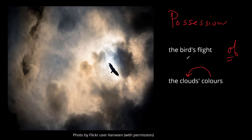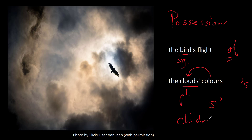Another thing to pay attention to is whether the noun is singular, as in bird, or plural, as in clouds. For singular nouns we typically add an apostrophe and an s, whereas for plural nouns most of them end in s, so we just add an apostrophe and that's it. There are some exceptions — for instance, children is a plural noun, but it ends in apostrophe s because children does not end in an s. So watch out for those exceptions, but for the most part: if it's singular, add apostrophe s, and if it's plural and ends in an s, just add the apostrophe.